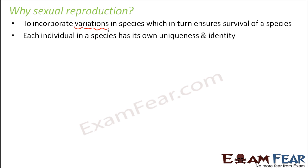Each individual in a species has its own uniqueness and identity. In case of asexual reproduction, it was just the same organisms getting produced — morphologically identical, genetically identical — so there was no uniqueness at all. For example, all the hydra produced by budding will be exactly similar, so there is no uniqueness, no identity. But in case of sexual reproduction, each organism will have its own uniqueness and its own identity. Suppose a couple has three kids — each of their kids will have their own identity; by looking at them you can identify who is who.